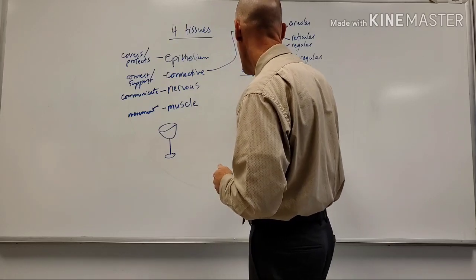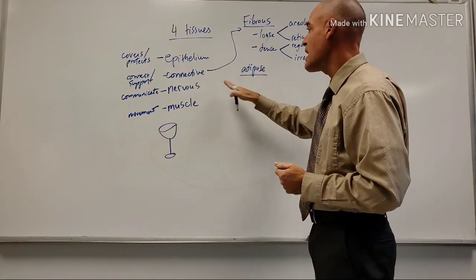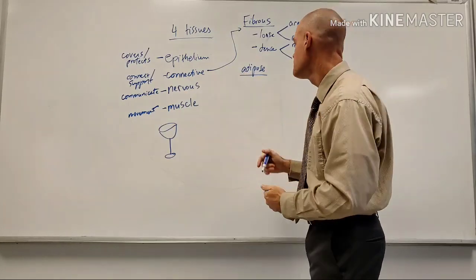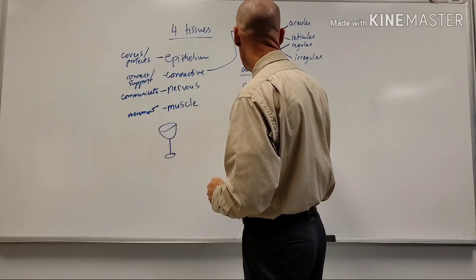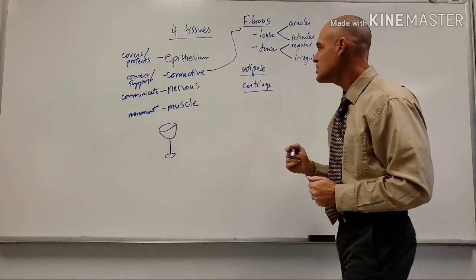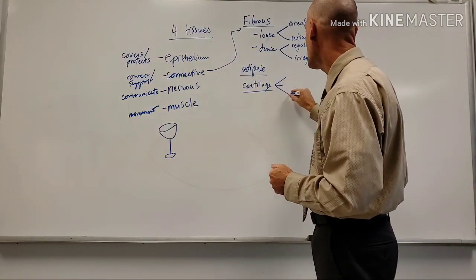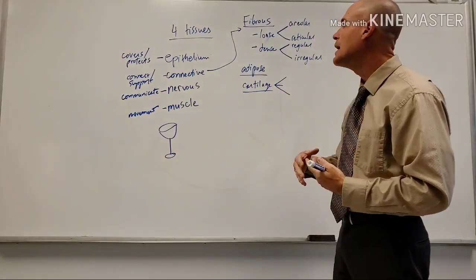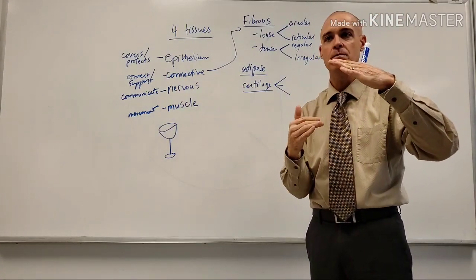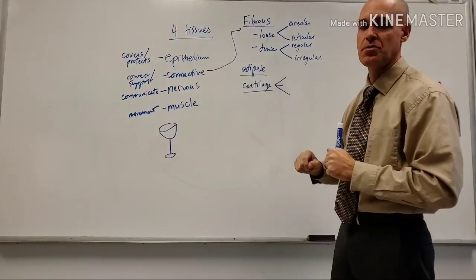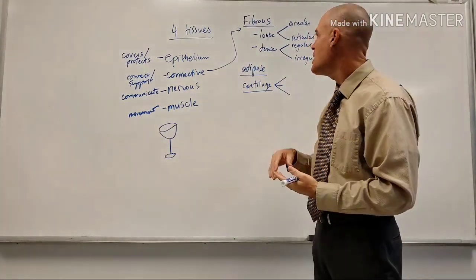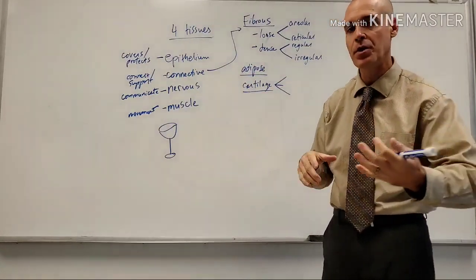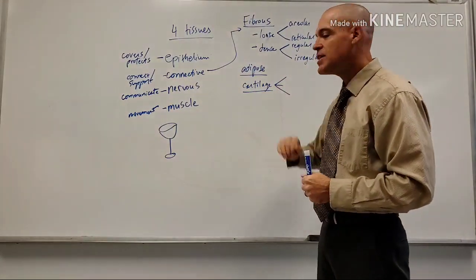Next is adipose - fat - which is considered a connective tissue used for energy storage, cushioning, and insulation. Then we have cartilage. One unique thing about cartilage is that while connective tissue in general has lots of blood vessels - like the dermis and adipose - cartilage has no blood vessels. It's the only connective tissue without blood vessels.